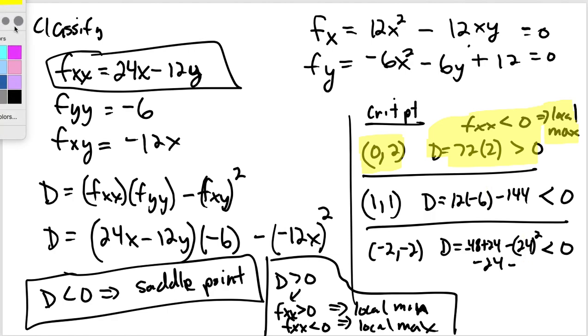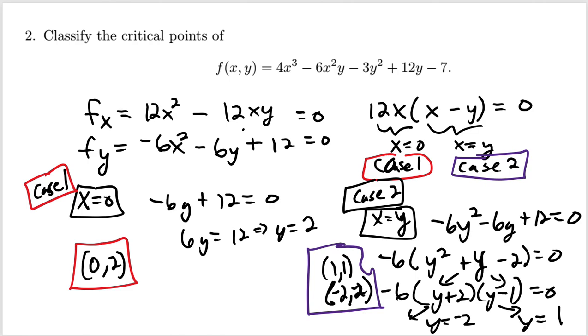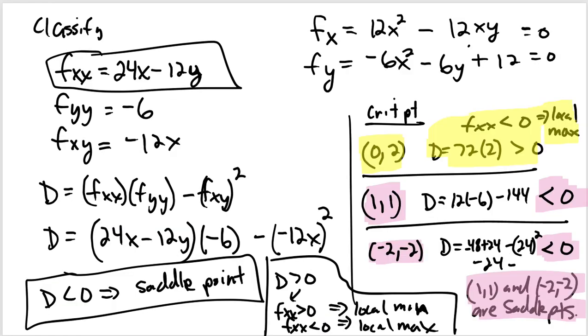And then both of these are saddles. D is less than 0 for both of these critical points. So (1, 1) and (-2, -2) are saddle points. Find and classify the critical points. Hopefully that was helpful. You got to take your first partials, set them both equal to zero simultaneously to find the critical points. To classify, you go to your second partials and create this formula based off all of your second partials. That can help you decide what type of critical points you have. Thank you very much.